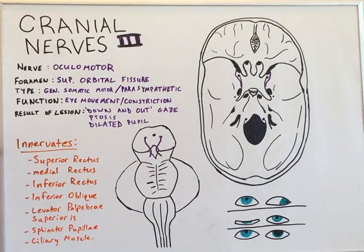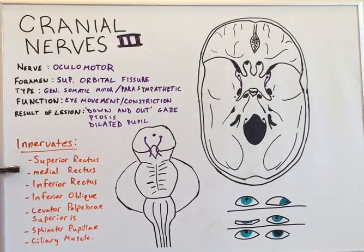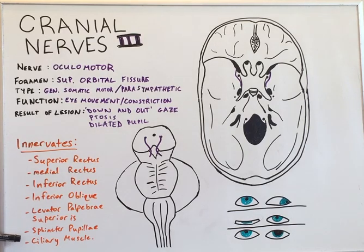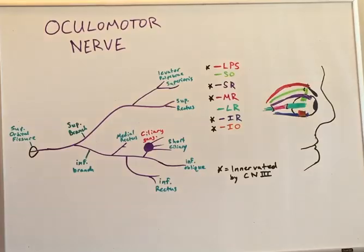The muscles innervated by the ocular motor nerve include the superior rectus, medial rectus, inferior rectus, inferior oblique, levator palpebrae superioris, sphincter pupillae, and the ciliary muscle.